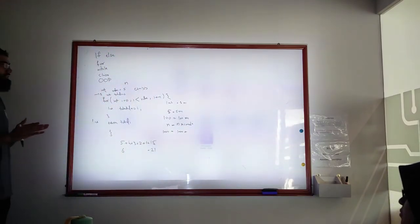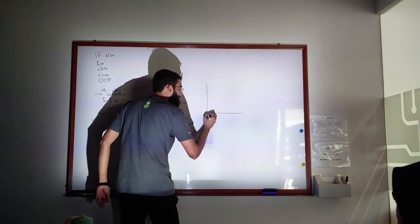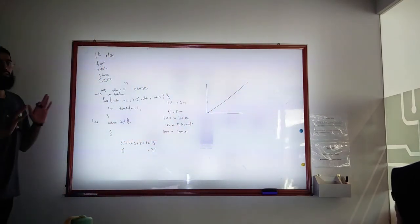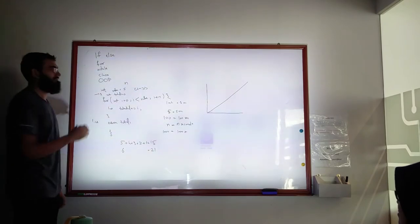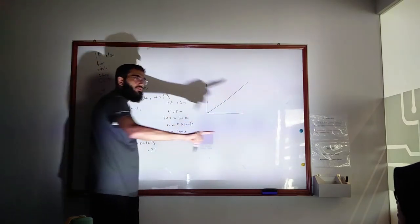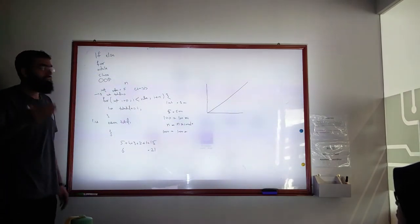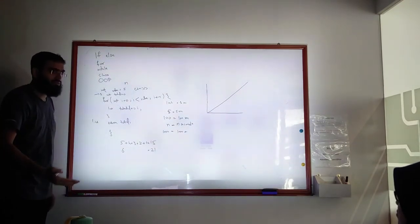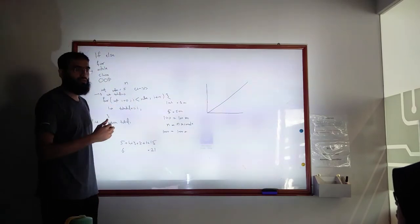In mathematics, this is called linear. If I draw a graph, a linear graph is always a straight diagonal line. Now I will show you why mathematics is important in programming. If you are working in a big company — in our company we have more than 100,000 listings — and you have an algorithm that is linear, it will take 100,000 seconds to achieve something.